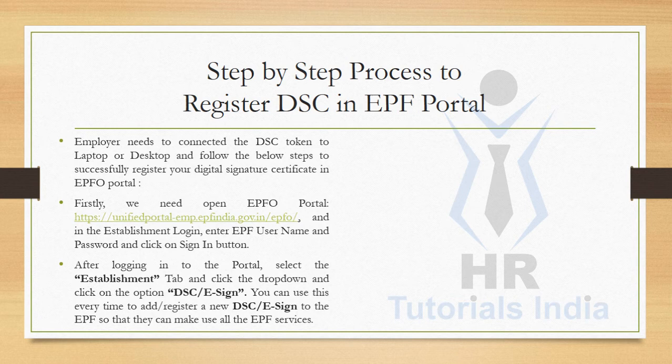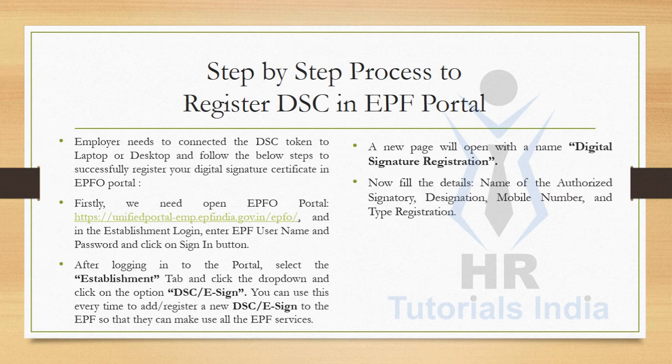After logging into the portal, select the Establishment tab, click the dropdown, and select the option DSC or E-Sign. You can use this option every time to add or register a new DSC or e-sign. A new page will open named Digital Signature Registration.